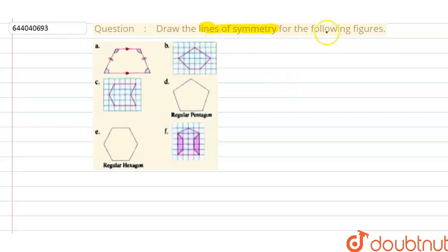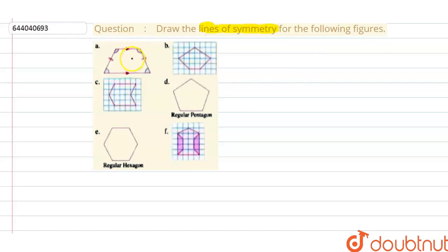Let us discuss the given problem. We have to find the lines of symmetry of the following figures. Considering figure (a), which is a trapezium. First of all, let us understand the concept of line of symmetry. The line of symmetry is the line which divides any figure into equal halves.